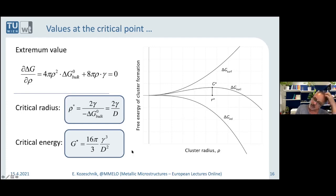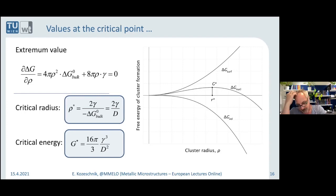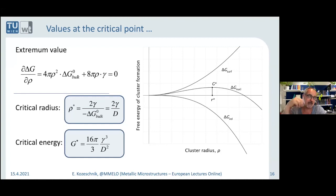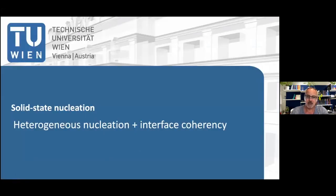The barrier contains more or less two parts: the interfacial energy cubed and the volume free energy change — or the driving force for second phase formation squared. These two quantities are what we are most interested in. One of my favorite things is always to predict something and not simply fit to something. My ambition has been to predict nucleation of new phases instead of just fitting quantities like interface energy — I want to predict it, not fit it.